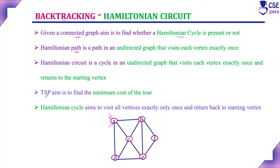This Hamiltonian circuit problem is similar to the traveling salesman problem. But the difference is: in the traveling salesman problem, the cost to travel from one edge to another edge is given, and the traveling salesman has to choose the route with the minimum cost. In traveling salesman, the aim is to start from one vertex, visit all other vertices, and return back so that the cost of the tour is minimum. But in Hamiltonian circuit, we just find a circuit visiting all vertices exactly once and return back — we do not consider the cost.